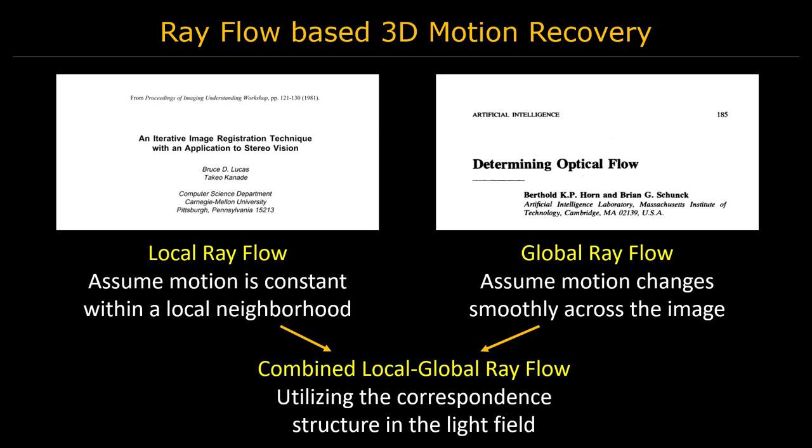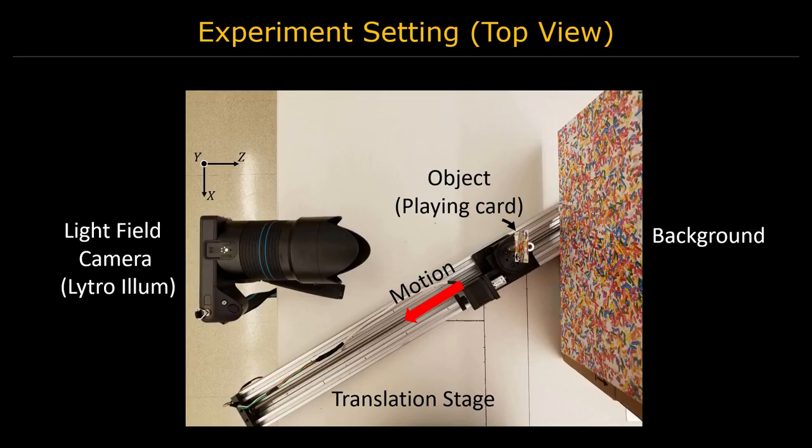Next, we show 3D motion recovery using the proposed techniques. We use a Lytro Illum camera to capture light fields. In the first experiment, the scene consists of a static background and a single moving object, a playing card.